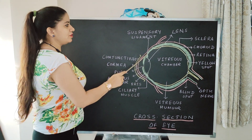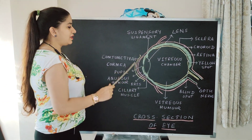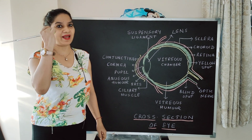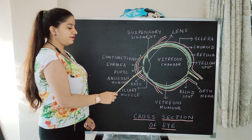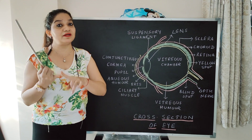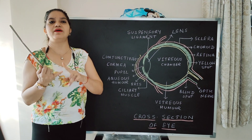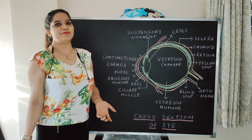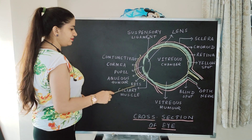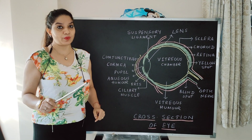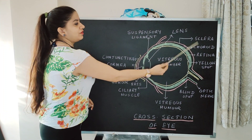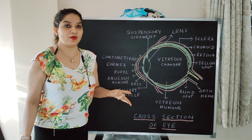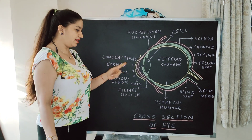Iris is an extension of the choroid. The large round colored part of your eye is the iris. Basically, iris gives color to your eye — blue color, black color, green color. There are many different types of eye color which are given by the iris. Most important question: what is the extension of choroid? Iris. Which layer gives color to the eye? Again, iris.